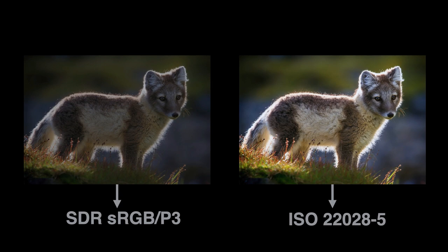Now the next question: can we combine the flexibility we had in the DNG plus profile gain table map workflow efficiently with a workflow that's compatible with an output-referred format such as sRGB or 22028-5? Please let me know if anyone knows a better name for this Dash 5, because it's not going to catch on unless we come up with something better.